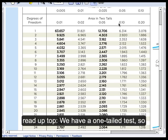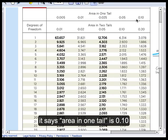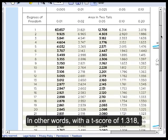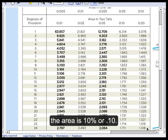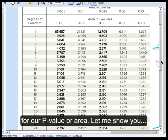So at 1.318, read up top, we're looking at a one-tailed test. It says the area in one tail is 0.10. In other words, with a t-score of 1.318, the area is 10% or 0.10. Now, this actually gives us a guide, an estimate, for the size of our particular p-value or area. Let me show you.